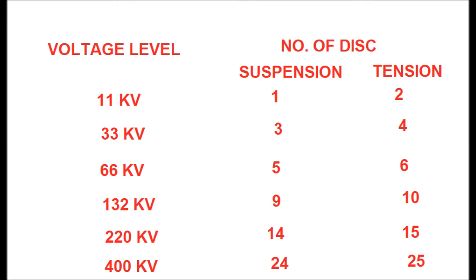For the 400 kV system, the number of discs for suspension type string is 24 and for tension string it is 25.